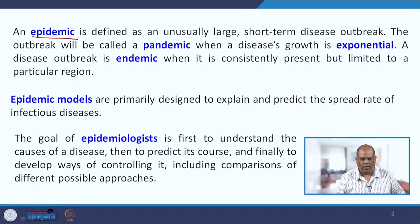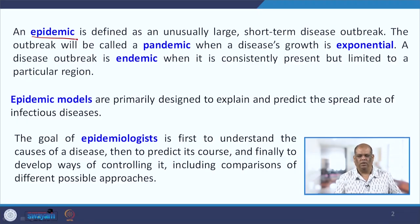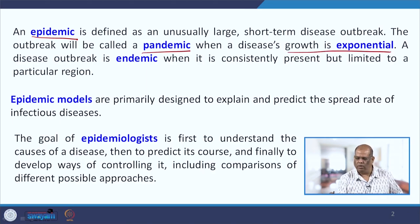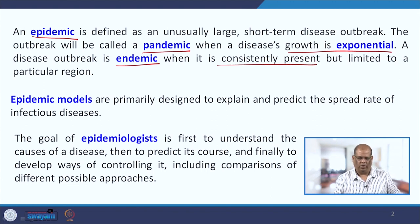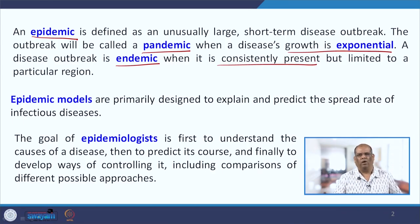Now to start with a little recapitulation. An epidemic is defined as usually a large short-term disease outbreak. The outbreak will be called a pandemic if the disease growth is exponential, and it will be called endemic if it is consistently present but limited to a particular region. For pandemic you can recall COVID-19, and for endemic you can recall malaria, cholera, etc.